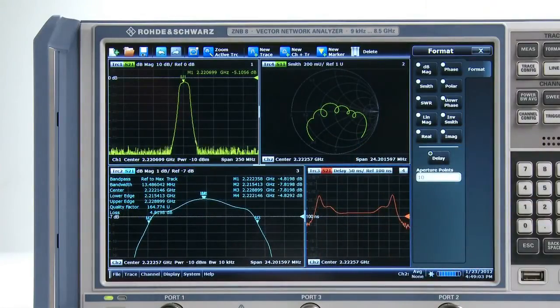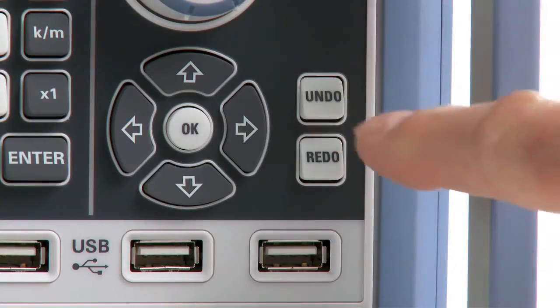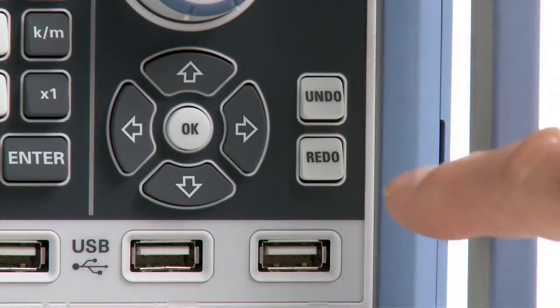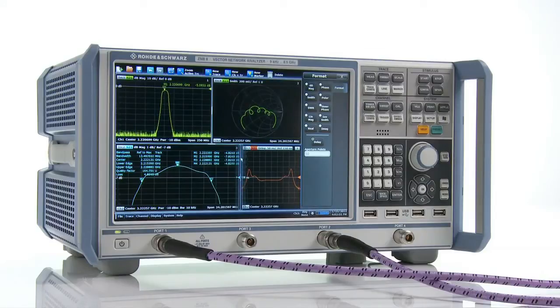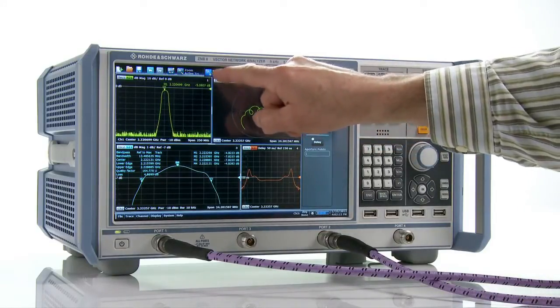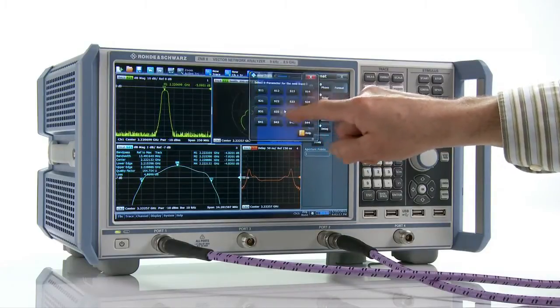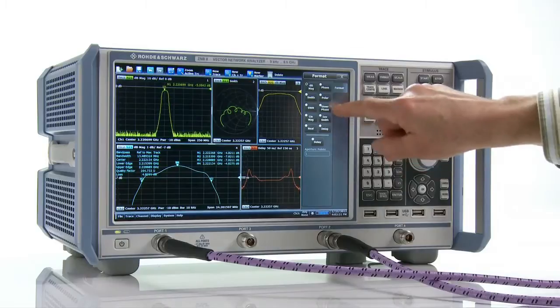With the ZNB, it's also easy to go back to a previous setting or correct an entry. Just use the undo and redo keys and quickly restore the setting you want. The ZNB's oversized screen lets you view all characteristics of interest at the same time, including, for example, further S-parameters or phase ripple.